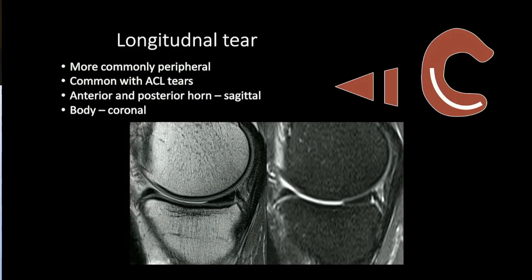A bucket handle tear is a large complicated longitudinal tear. A longitudinal tear runs along the long axis of the meniscus and is commonly peripheral. These tears are common with ACL tears. For beginners in MSK reporting: always look at the meniscus in a triangular fashion — it helps identify the pattern most easily. To look at the body, use coronal images; for the anterior and posterior horn, use sagittal images.